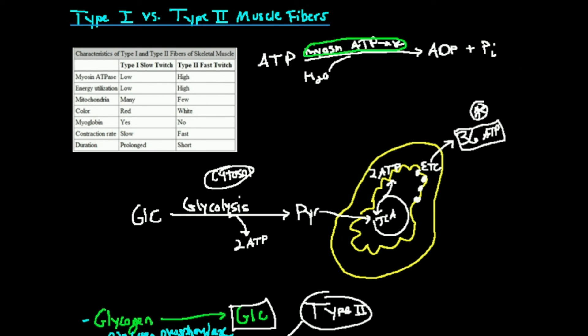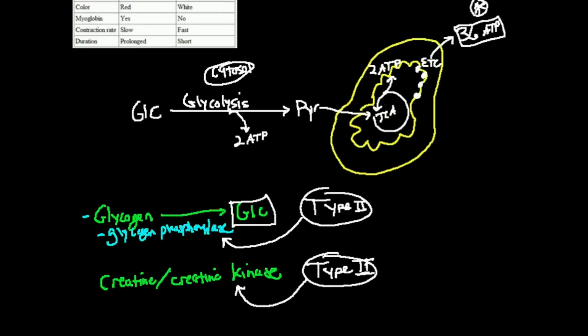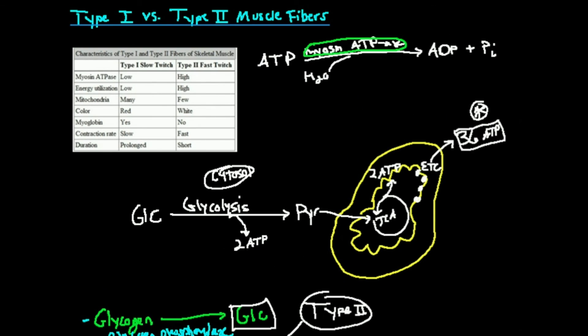So, that is a very, hopefully, detailed look at the differences between type 1 and type 2 muscle fibers. If you like this video, make sure to like the video and subscribe to the channel for future videos and notifications. And, we're going to do more on this type of skeletal muscle physiology in future videos. Thank you very much.